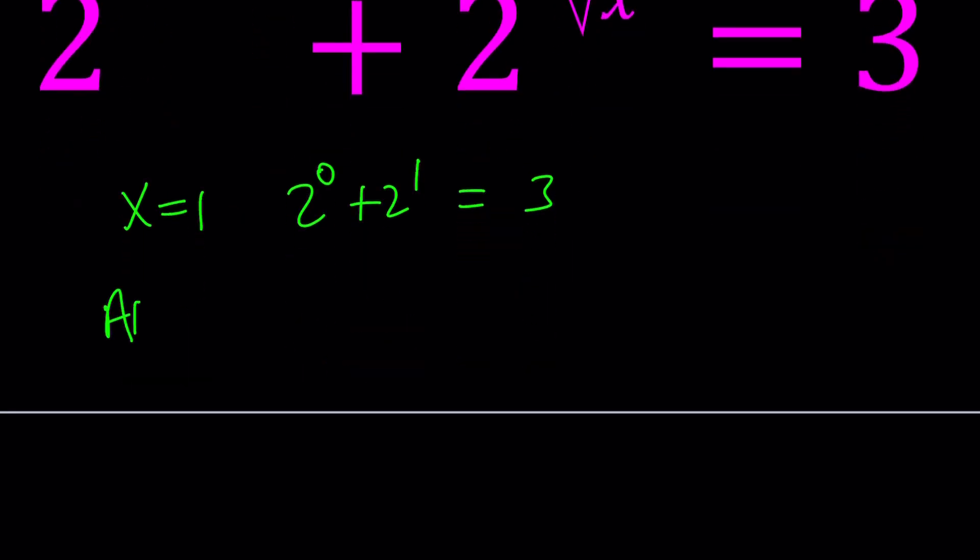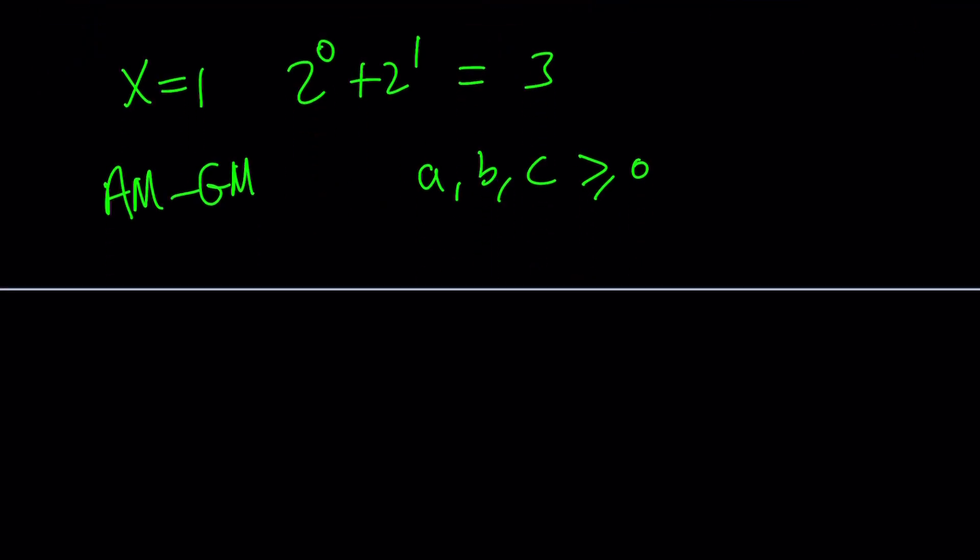And that would be AM-GM inequality. We're going to be using AM-GM inequality. And here's how it works with 3 numbers. If you have a, b, c that are all greater than or equal to 0, then we can safely say that their arithmetic mean, which is AM, so you basically add them up and divide by 3, is always greater than or equal to their geometric mean, which is the cube root of their product.